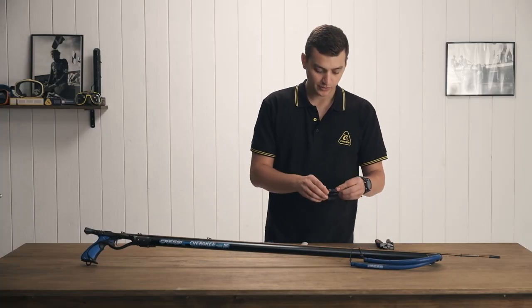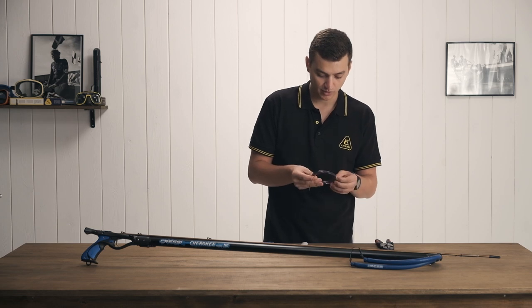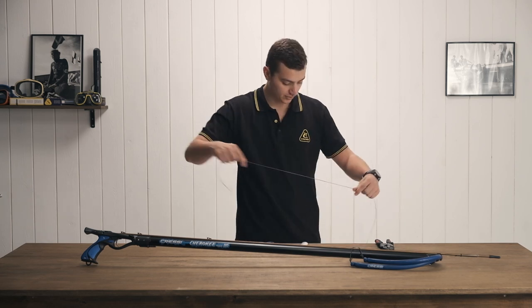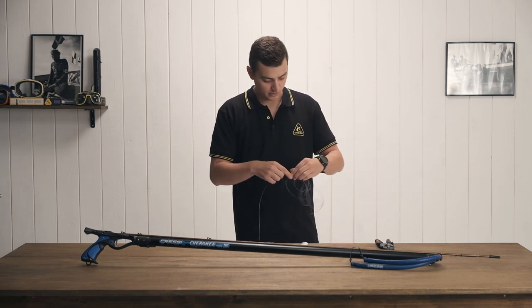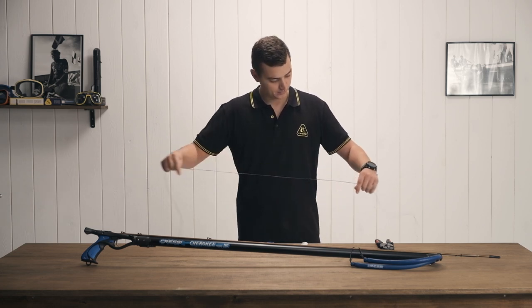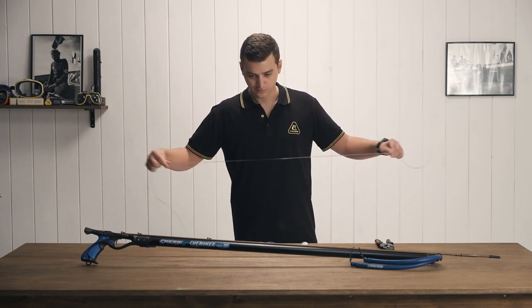So the first thing we're going to do is unwrap our monofilament and get it all stretched out. Make sure that there's no knots in it, no kinks.